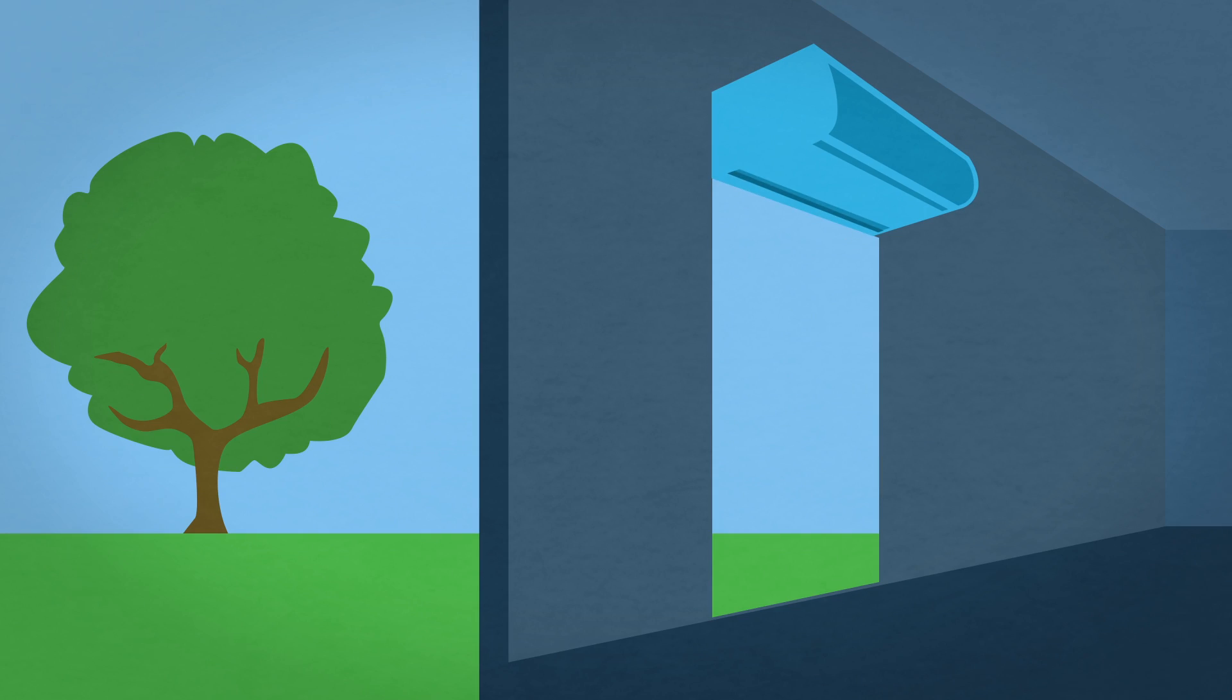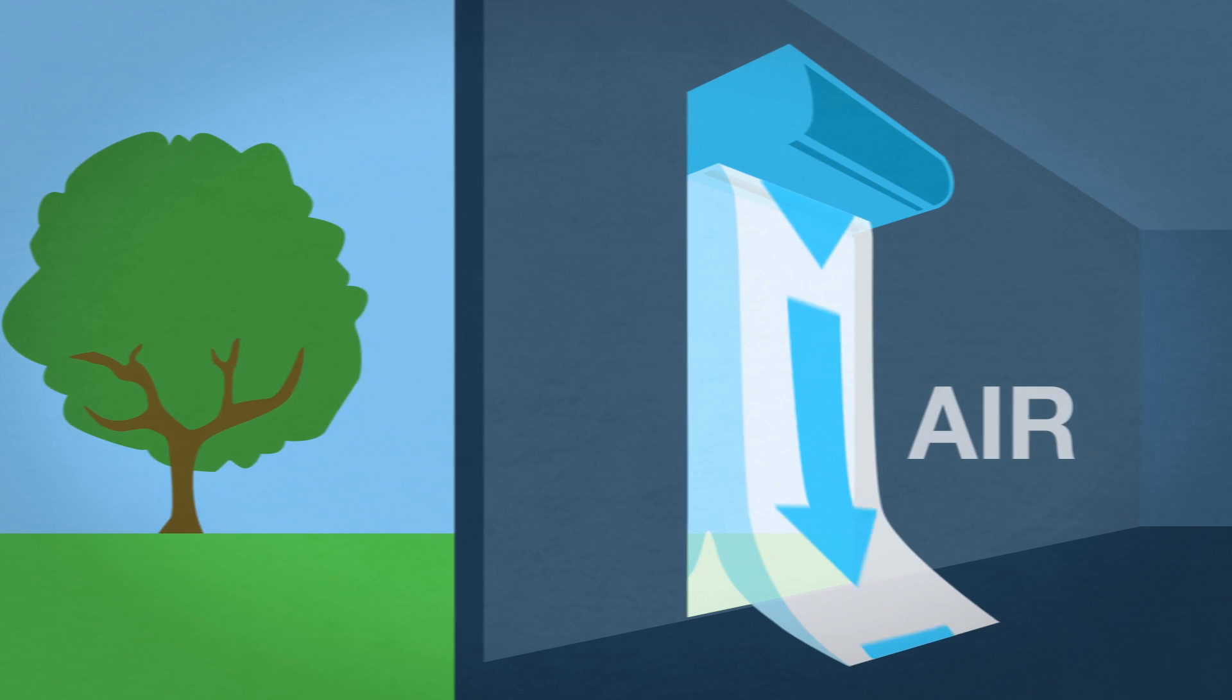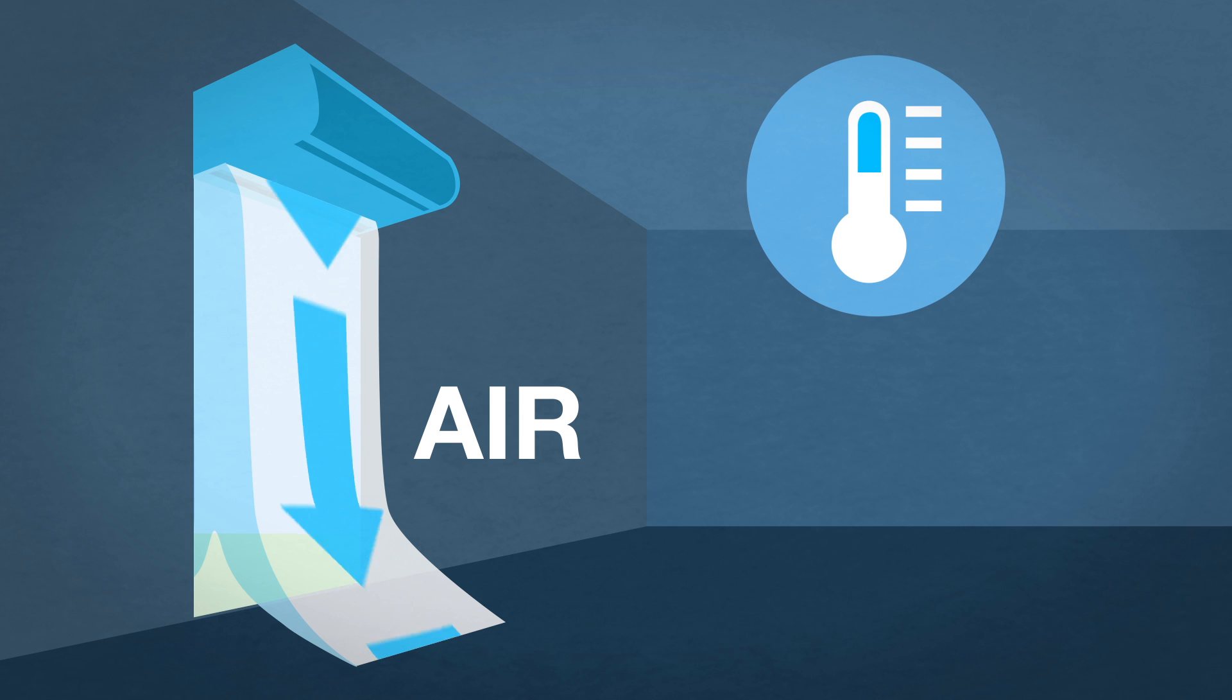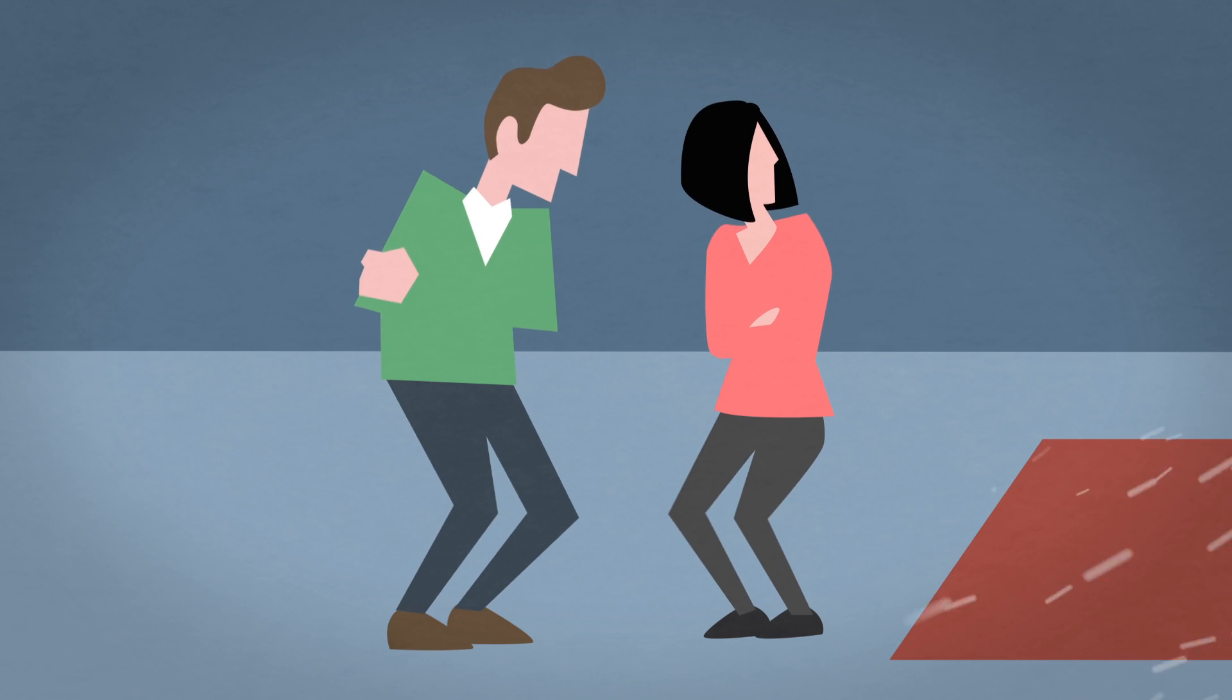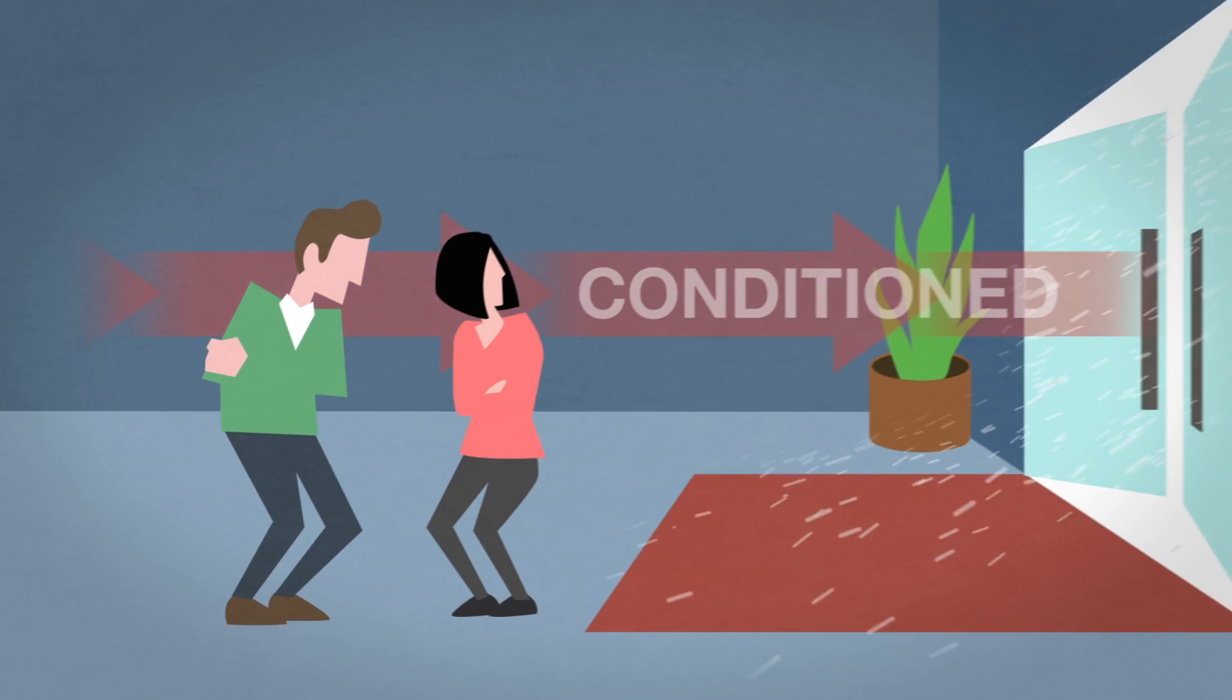Simply put, an air curtain divides interior and exterior spaces with a moving curtain of air, maintaining a comfortable interior environment and saving valuable energy when the door is open. Without an air curtain, an open door allows conditioned air to escape.